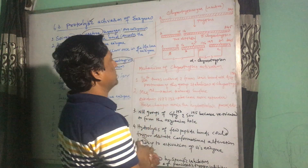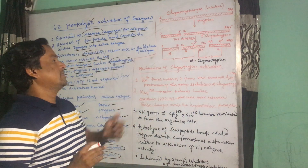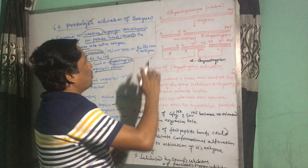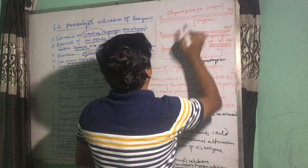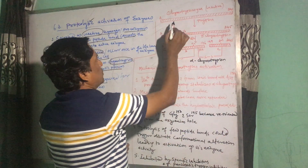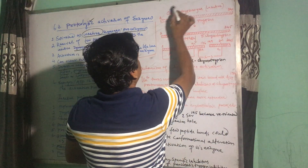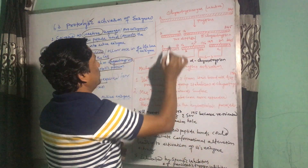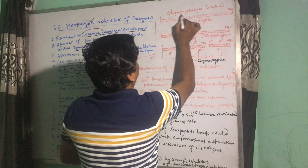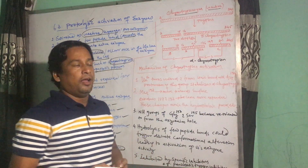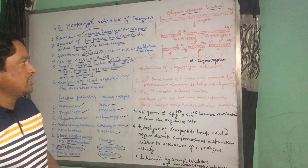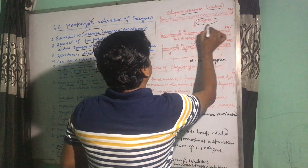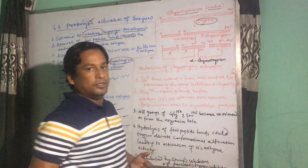Chymotrypsin is a prototype example of proteolytic activation. We will look at the major events that happen during proteolytic activation. Chymotrypsin is originally synthesized as a 245 amino acid polypeptide called chymotrypsinogen. This is secreted by the pancreas and secreted into the duodenum, where it meets trypsin.